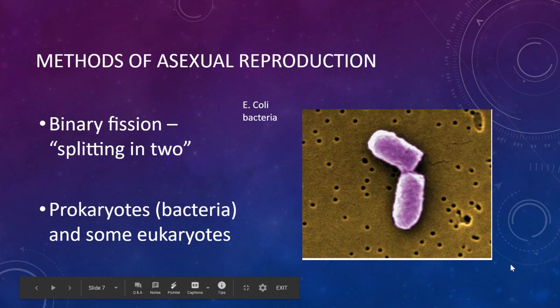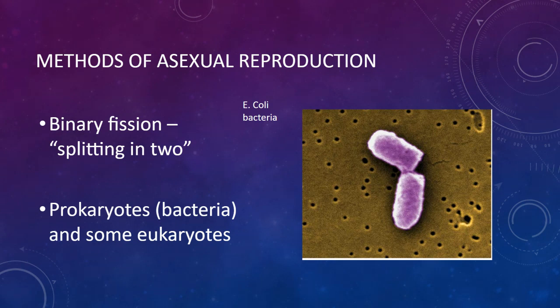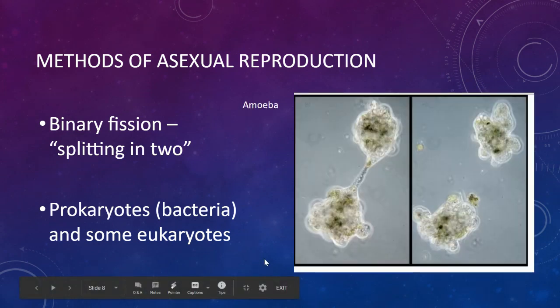Bacteria reproduce by simply splitting — they undergo what's called binary fission, splitting in two. We see this with most prokaryotes, organisms where we can't see the nucleus. They're simple organisms that just have a loop of DNA, a chromosome. You'll also see this sometimes with some eukaryotes, like the paramecia and the amoeba.